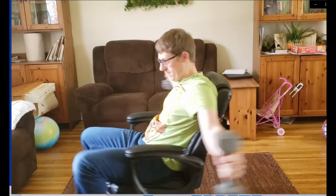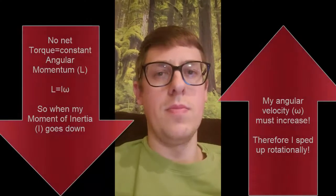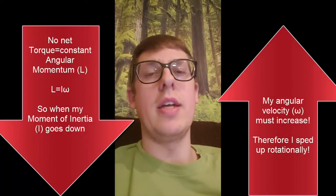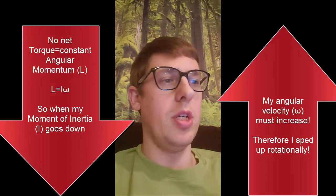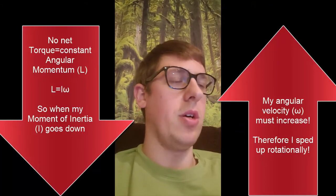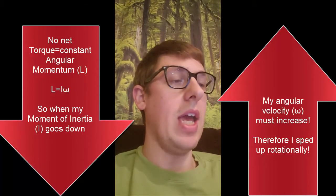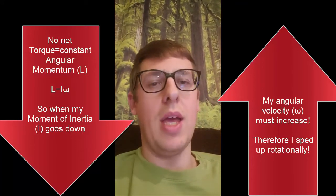Now I'm lifting my feet so there's no external torques anymore. But I'm about to change something. I totally spun up — that must be because I changed my moment of inertia. My moment of inertia went down. What's called rotational inertia decreased, and that meant that my angular velocity had to increase because my angular momentum had to stay the same.